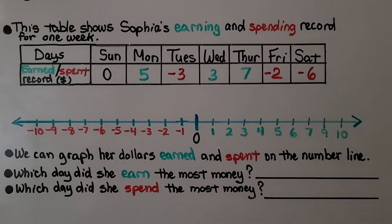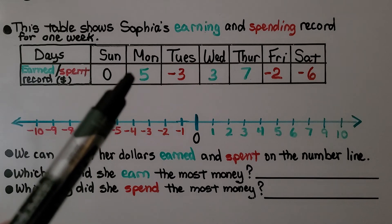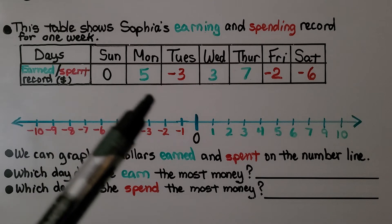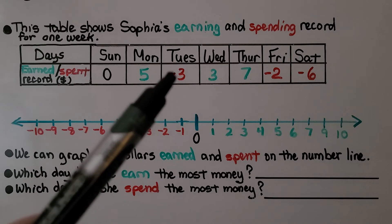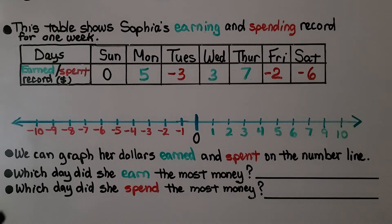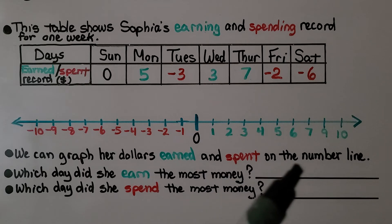This table shows Sophia's earning and spending record for one week. The green means she earned money. The red, negative number, means she spent money. We can graph her dollars earned and spent on the number line.